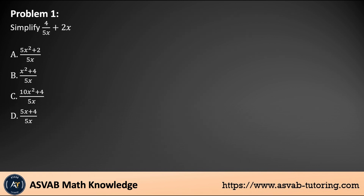Let's get started. Problem number one: simplify 4 over 5x plus 2x. Before you do any mathematical knowledge problem, make sure you copy the question on your notebook correctly, otherwise you get different answers. This is a fraction-related problem. Since 2x is not a fraction, you can put 1 underneath it, and then find the common denominator, which is 5x.